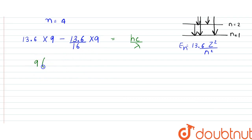it would be 9 bracket 13.6 minus 0.85 equals hc by lambda. So, lambda would be equal to hc by 9 into 13.6 into 0.85. So, hc in electron volt nanometer is 1240 electron volt nanometers.